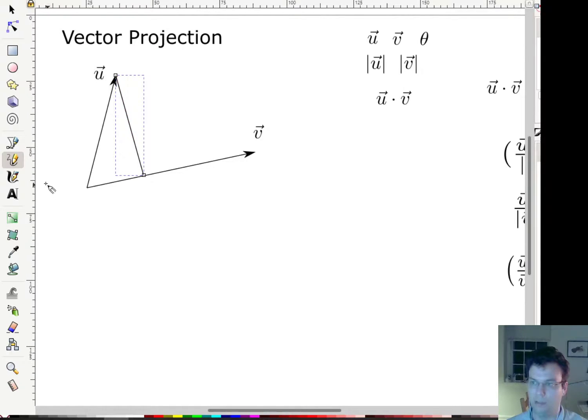The projection of u onto v is the shadow that u casts onto v. So what we do is we drop a perpendicular here so it makes a right angle, and this is now the vector that we have, and I will call it u proj v. So that is my vector. That is the shadow that u casts onto v. Okay, so that's all the projection is. In another way of saying it, it's a component of u that's in the direction of v.